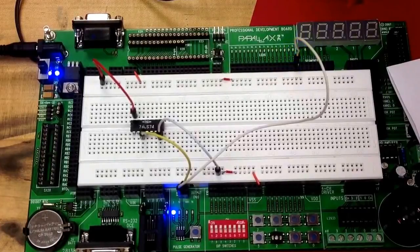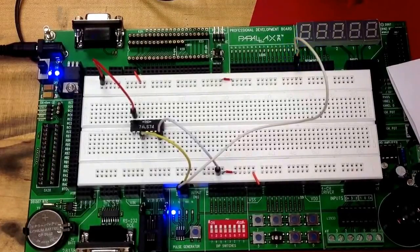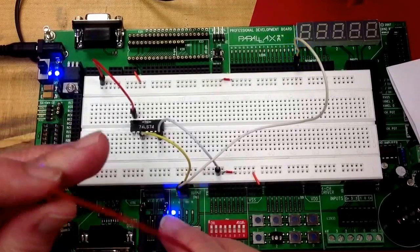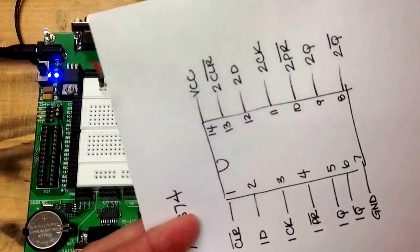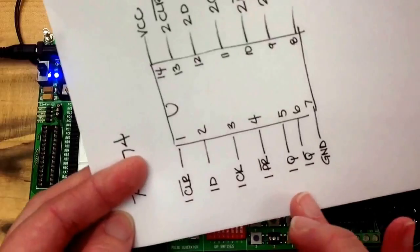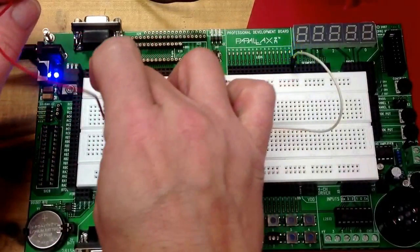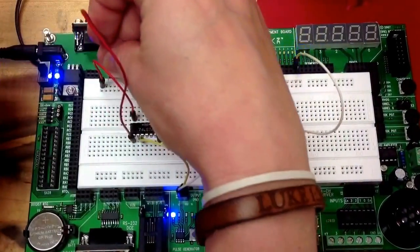All right, so the next thing that I do is I need to tie my preset and my clear both out to power. When I looked up the pinout diagram, 1 and 4 were preset and clear, so I'll run them to power as well because I just want to tie them out.